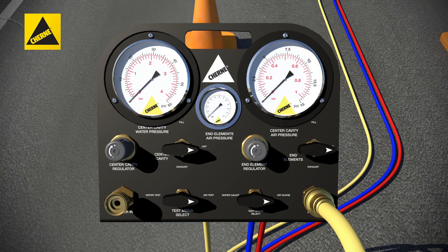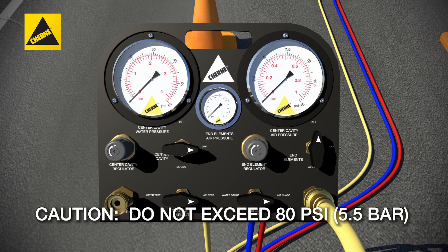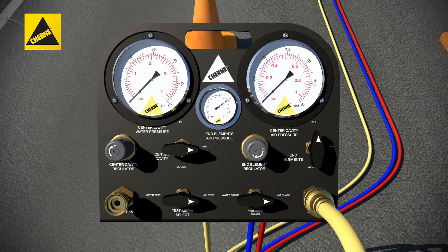Place the end element inflation valve in the fill position and adjust the end element regulator until 80 psi reads on the end element pressure gauge. Then place the end element three-way valve in the off position.